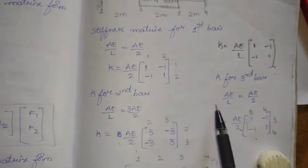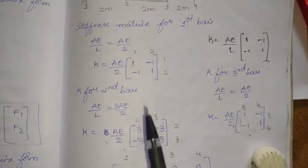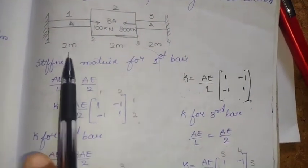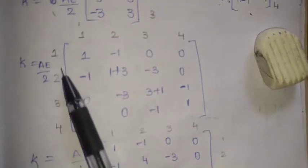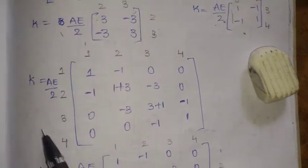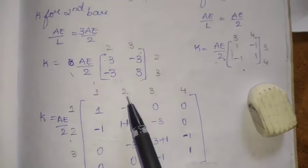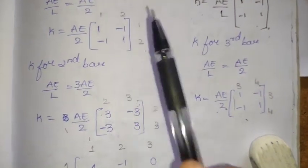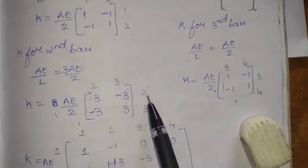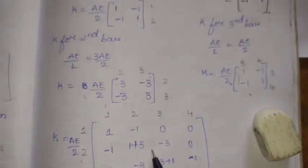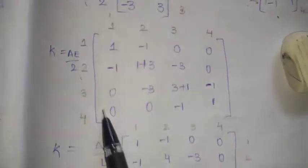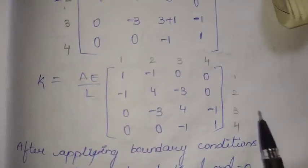These are the individual or local stiffness matrices for each element. Now we assemble the global stiffness matrix for the whole bar. Taking AE/2 as common, we write the inside elements. The (2,2) element coincides between bar 1 and bar 2, so we simply add them: 1 + 3 = 4. Similarly, the (3,3) element has 3 + 1 = 4. This gives us the assembled global stiffness matrix.